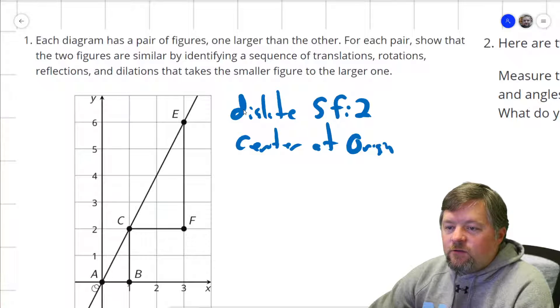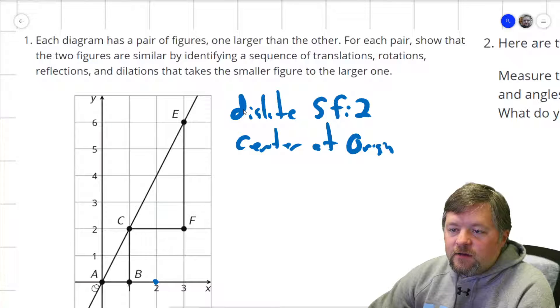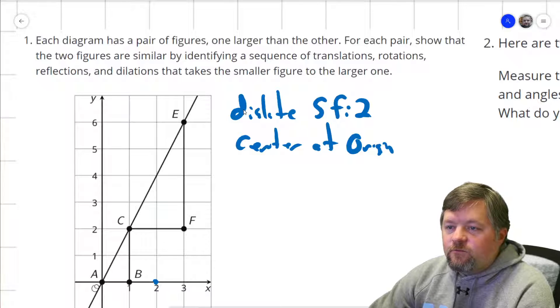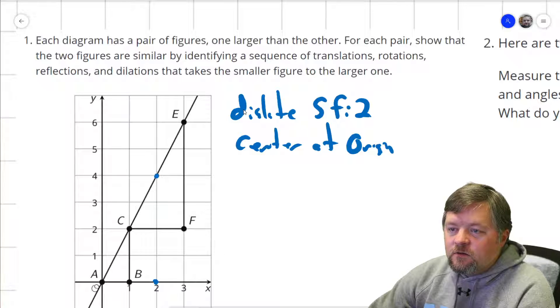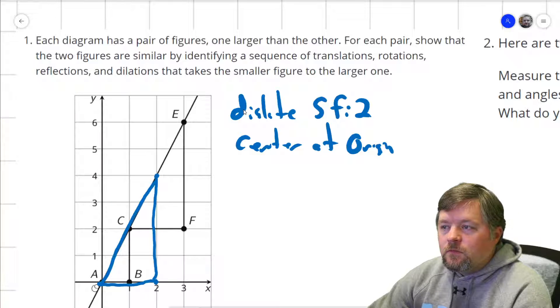Scale factor of two centered at the origin. This point, point A, would stay where it is. B would go from being one unit away to being two units away. C would go from being two up, one over, to being four up and two over.